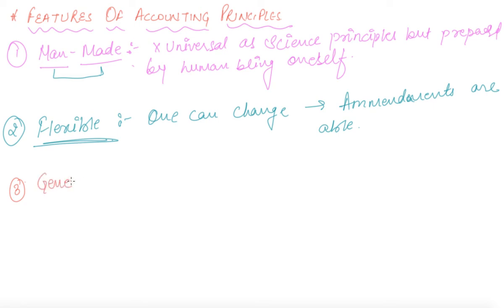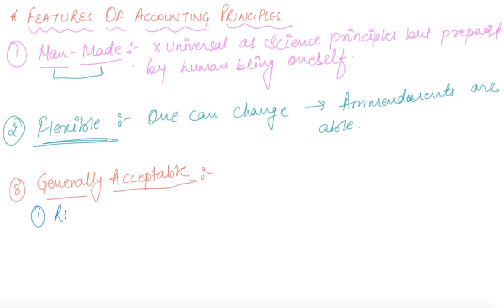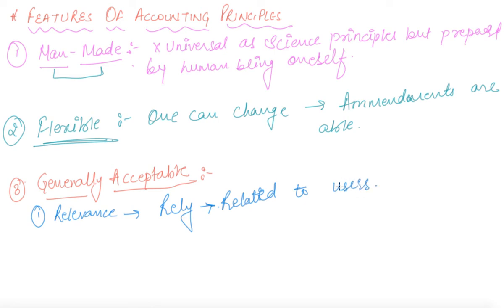Coming towards the third feature — generally acceptable. For principles to be generally accepted, there are some requirements that must be fulfilled. First of all, there should be relevance — that is, one can rely on it. The information should be related to the needs of the users. Only then can we say the accounting principles are relevant.